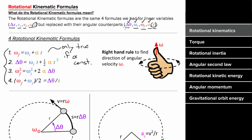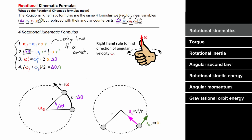What do each of these rotational variables mean? The angular displacement is the amount of angle the object has rotated through in a certain amount of time t. Angular velocity is defined to be the amount of angle you've rotated through per time, just like regular velocity is displacement per time. And angular acceleration is defined to be the change in angular velocity per time, just like regular acceleration is the change in regular velocity per time.